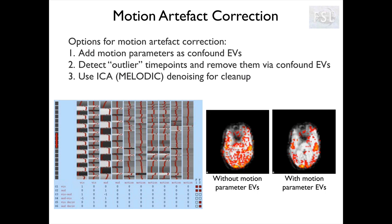There is actually a fourth option that is not listed here, which is to exclude the subject from the analysis. If they move too much, it is definitely worth trying to correct for motion, and we can combine two or more of these options together. But if the data is still too corrupted, we may need to face the fact that the data is unusable and we will need to exclude the subject. But for now, let's think positive and see how to apply these techniques.